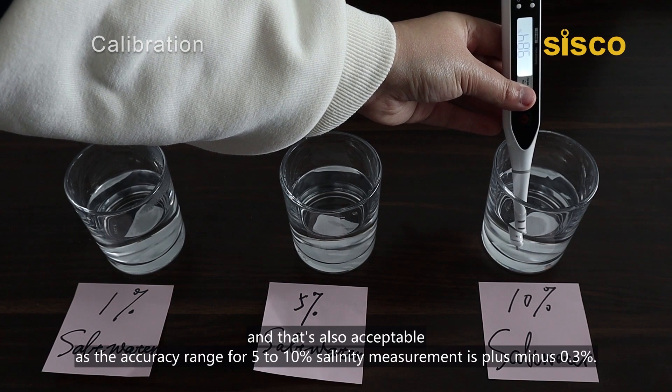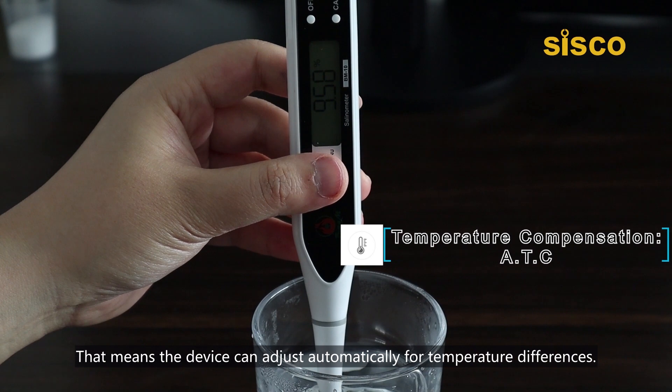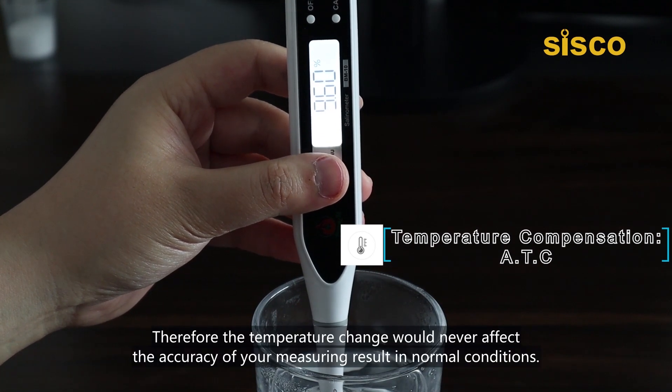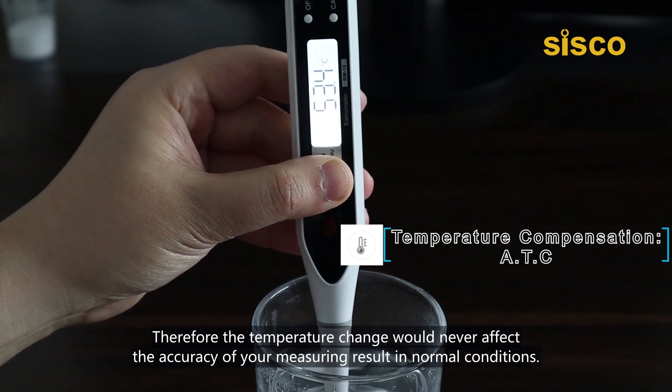In case you're wondering, this salinity tester has built-in temperature compensation. That means the device can adjust automatically for temperature differences. Therefore, the temperature change would never affect the accuracy of your measuring results in normal conditions.